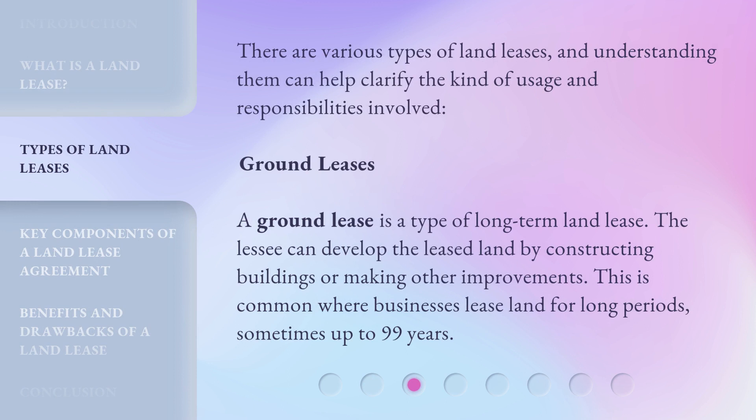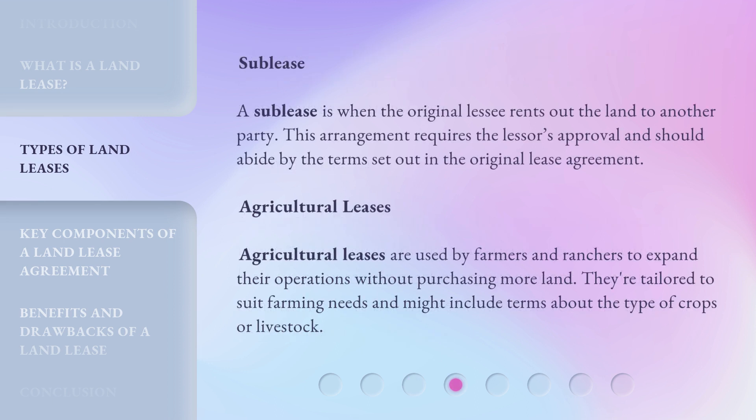There are various types of land leases, and understanding them can help clarify the kind of usage and responsibilities involved. A ground lease is a type of long-term land lease where the lessee can develop the leased land by constructing buildings or making other improvements. This is common where businesses lease land for long periods, sometimes up to 99 years. A sub-lease is when the original lessee rents out the land to another party, requiring the lessor's approval and must abide by the terms of the original lease agreement. Agricultural leases are used by farmers and ranchers to expand their operations without purchasing more land, and may include terms about the type of crops or livestock.